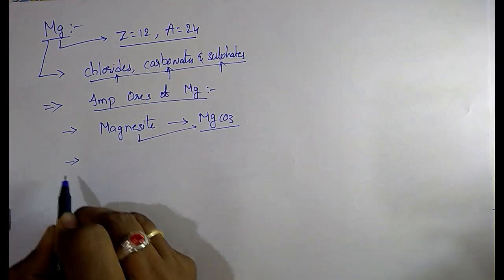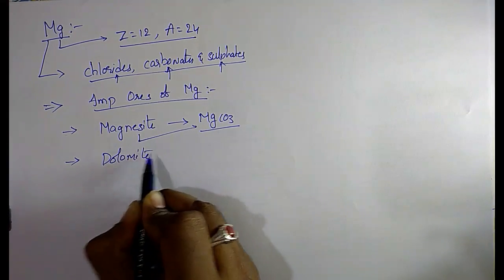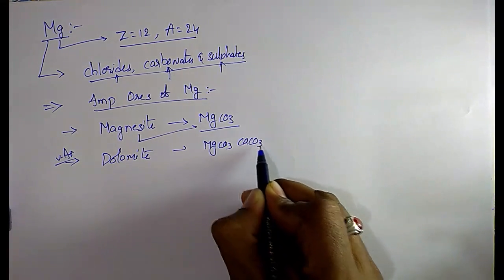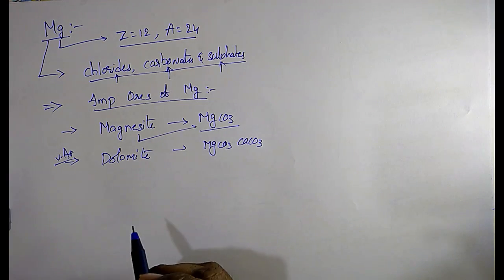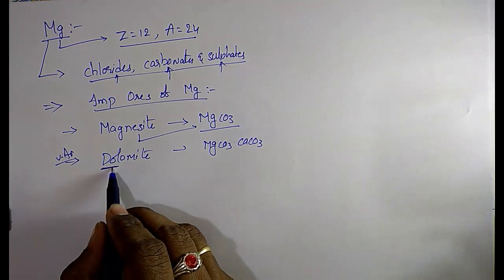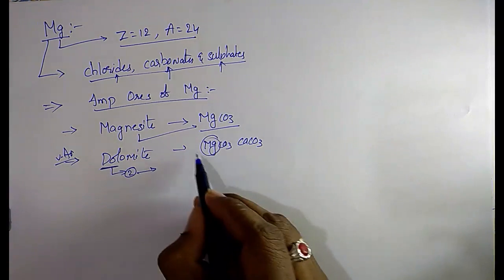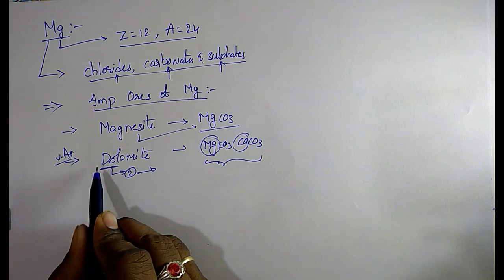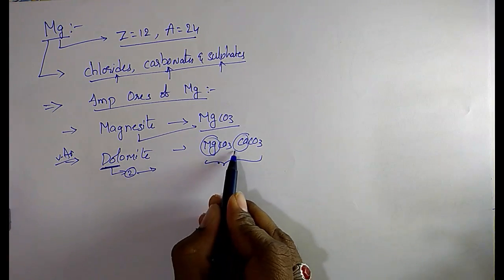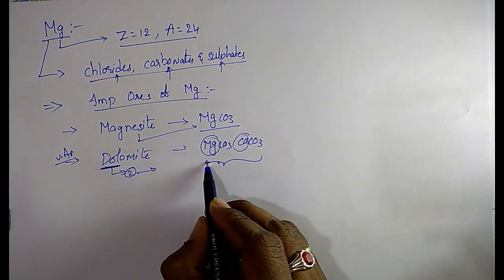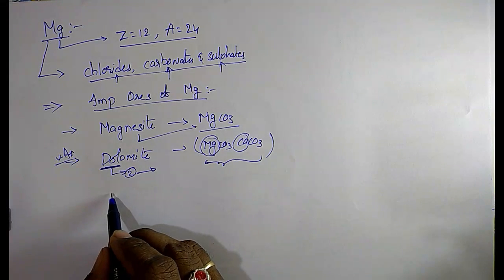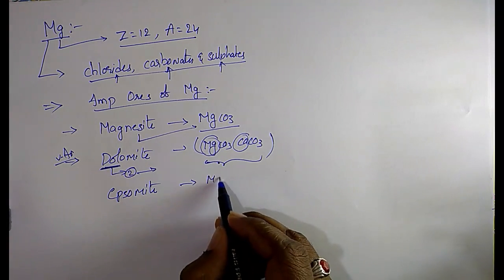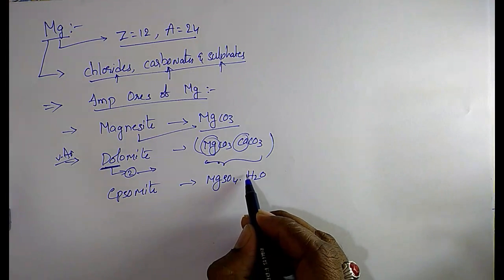The next ore is dolomite — very very important. Its formula is MgCO3·CaCO3. To remember this: 'Do' means 2, so dolomite has 2 compounds — magnesium carbonate and calcium carbonate. Just remember: dolomite, DO = 2 compounds: MgCO3 and CaCO3.